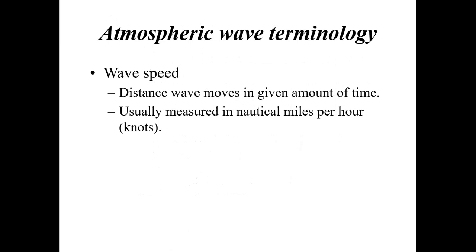Wave speed refers to the distance a wave moves in a given amount of time. For example, if I have a short wave over Washington State and 24 hours later that same short wave is over the Dakotas, I can calculate wave speed by measuring the distance traveled over that 24-hour period. Wave speed is usually measured in nautical miles per hour, also known as knots.